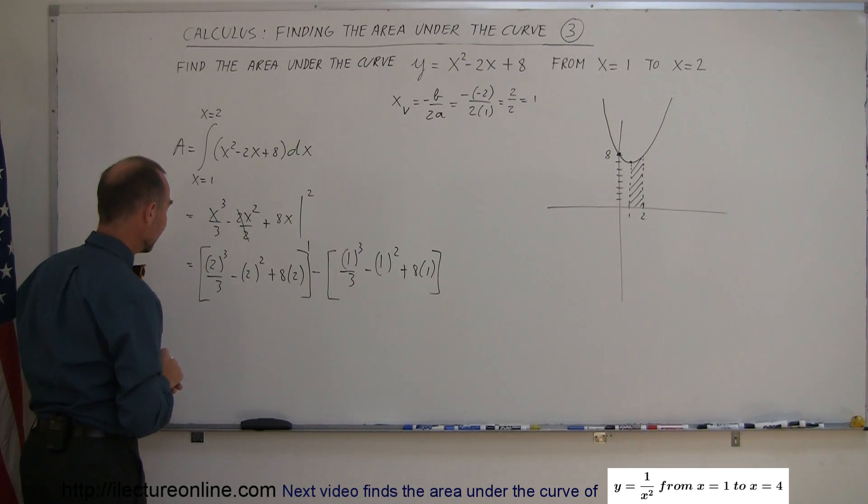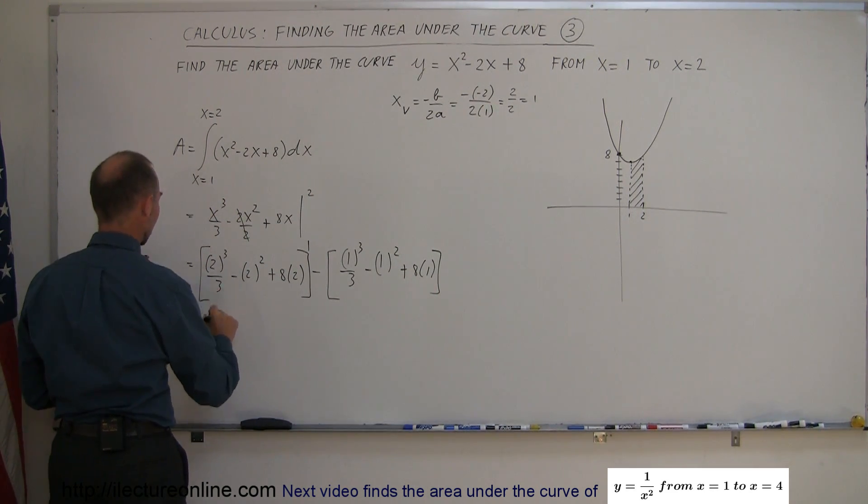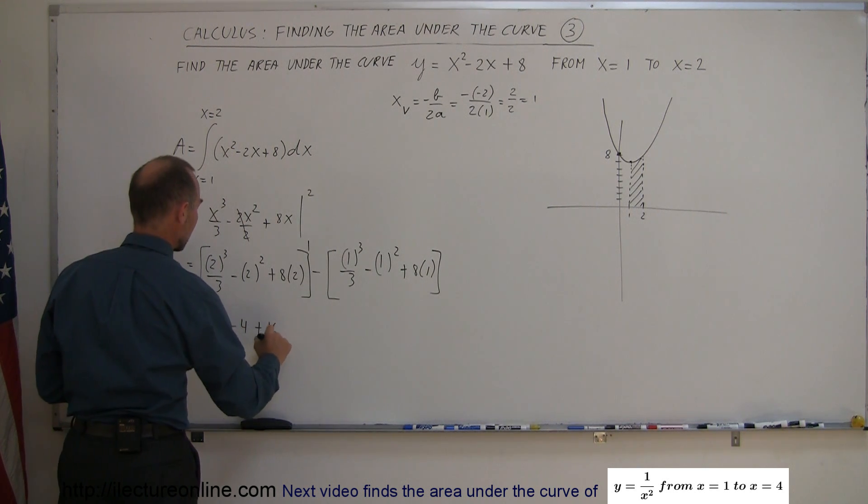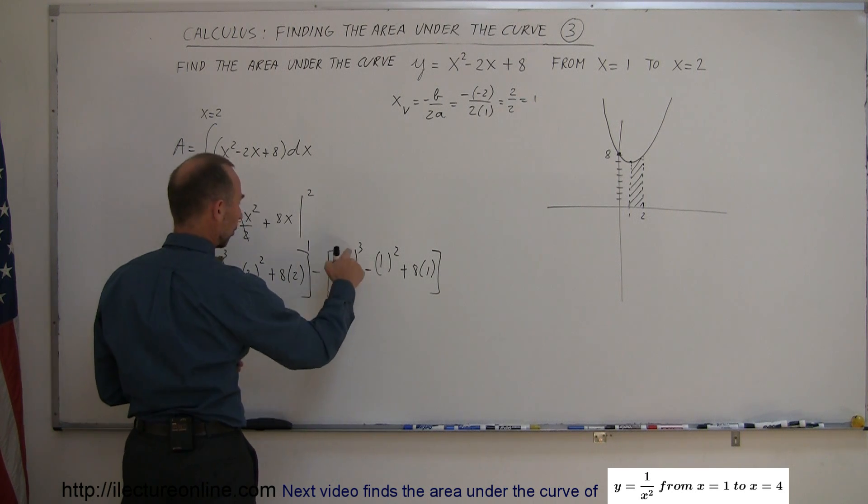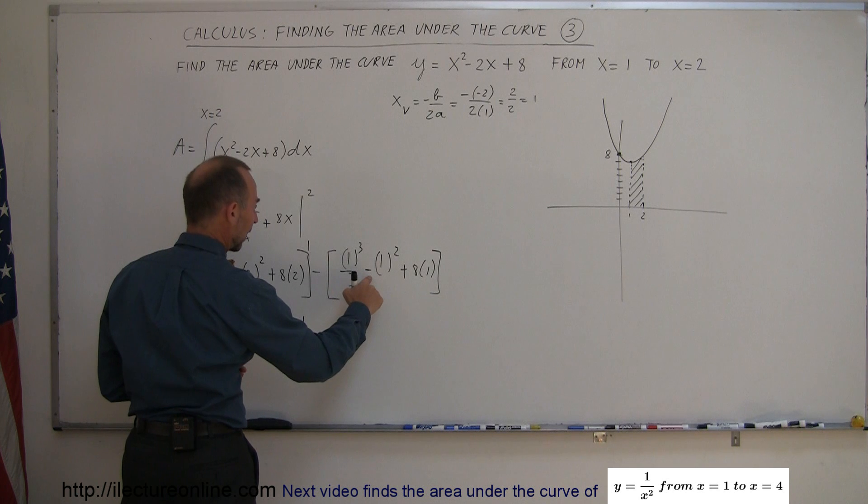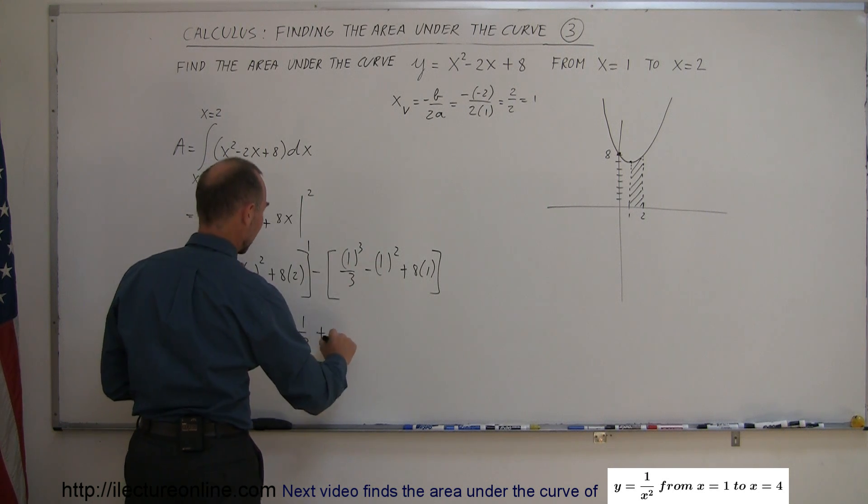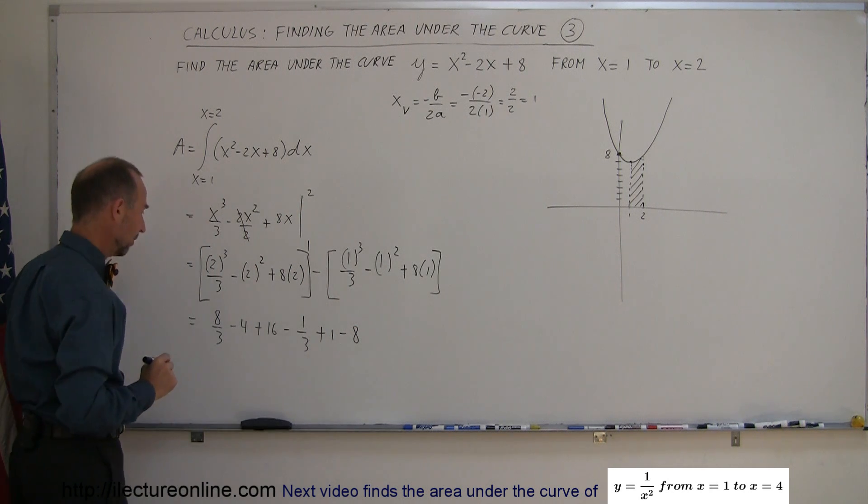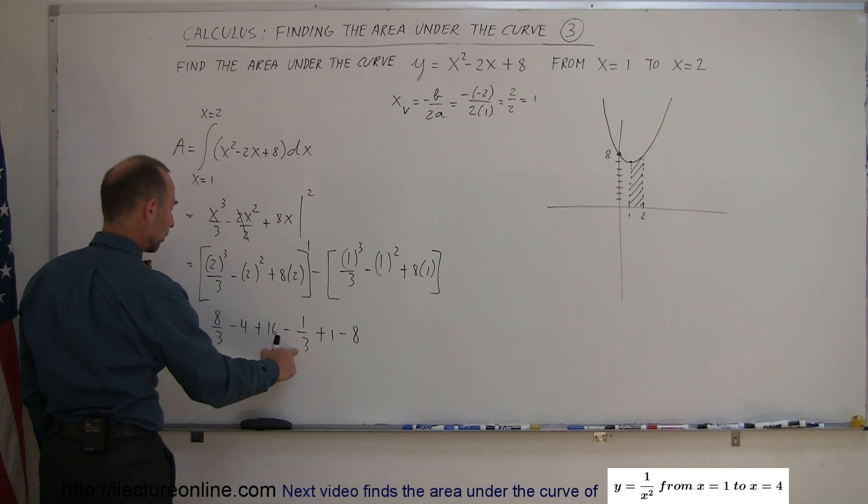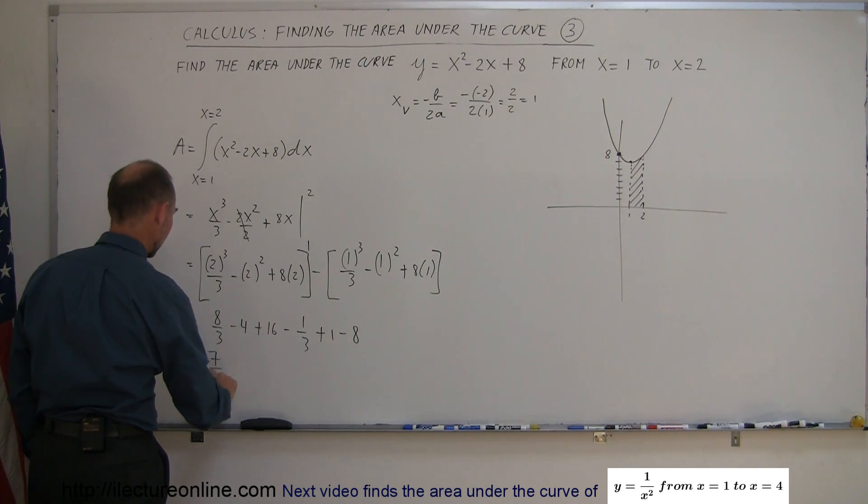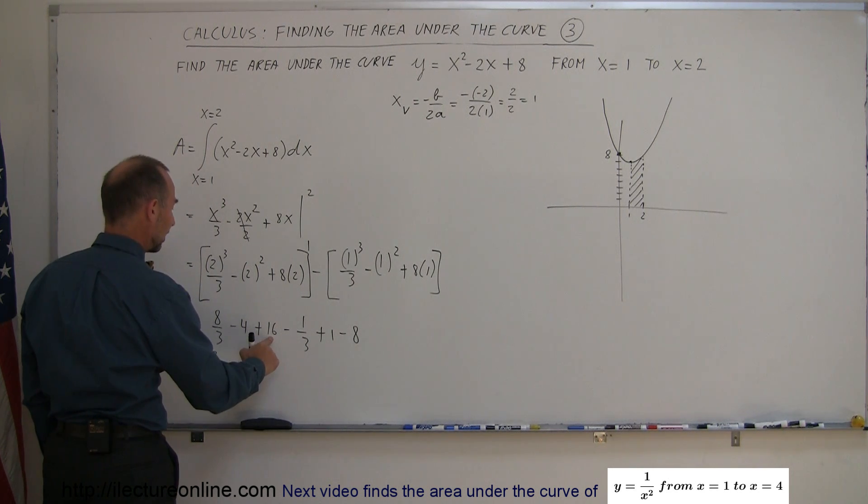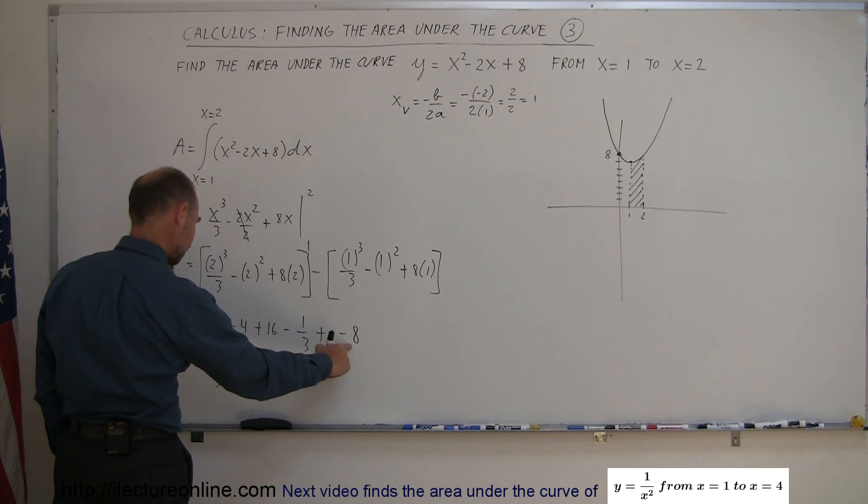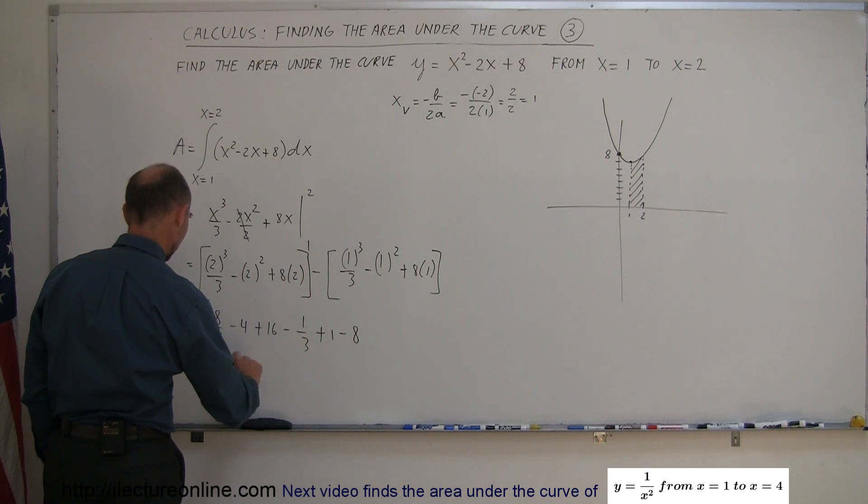Working that out, we should get the area. This gives us 8 over 3 minus 4 plus 16, and then we subtract minus 1 third. Minus times minus gives you plus 1, and minus times plus gives you minus 8. Let's simplify this. We have 8 thirds minus 1 third, that's 7 thirds. We have minus 4 plus 16, that's plus 12. Minus 8 gives us plus 4. Plus 1 is plus 5.